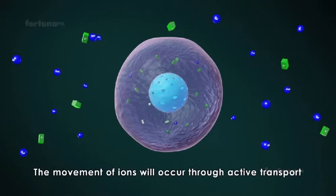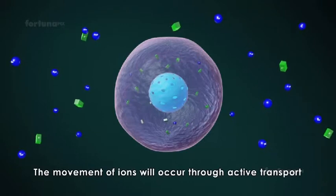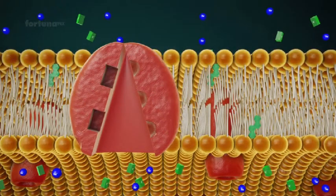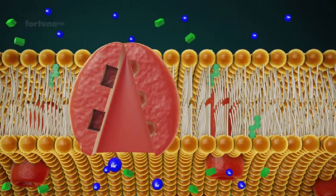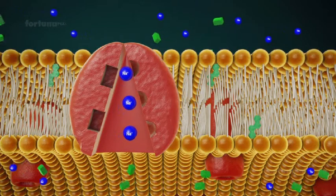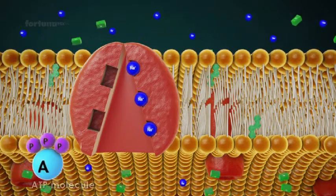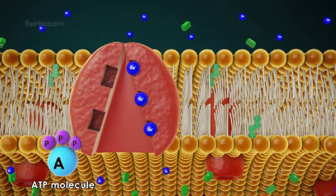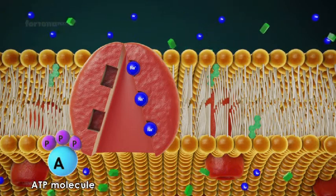The movement of ions will occur through active transport. Three sodium ions will move into the protein channel on the membrane and bind to the specific binding sites. An ATP molecule will provide the energy needed to allow the protein channel to open towards the outside.